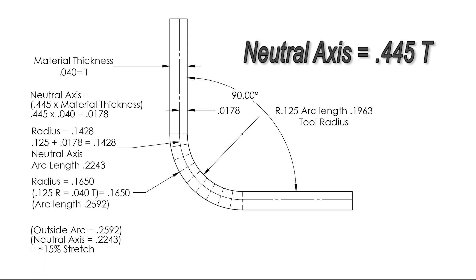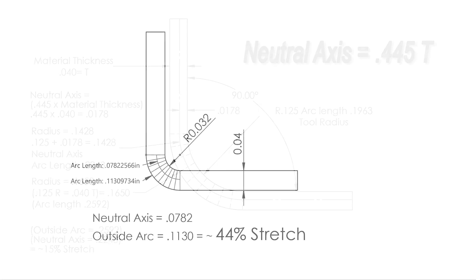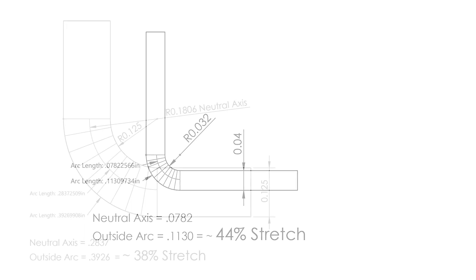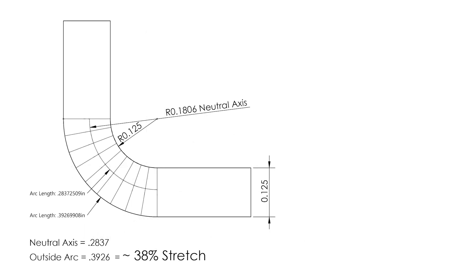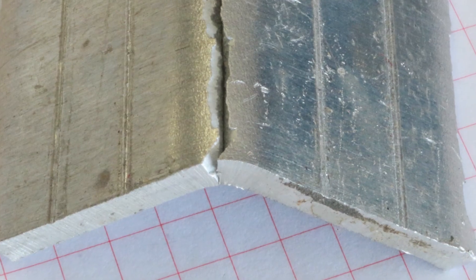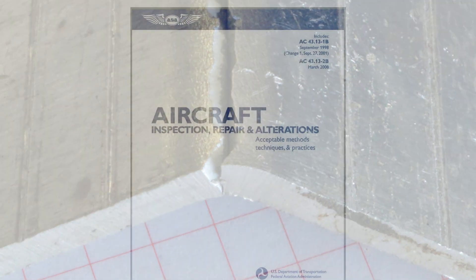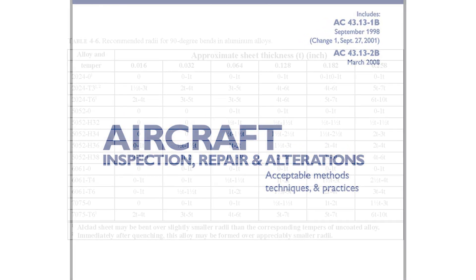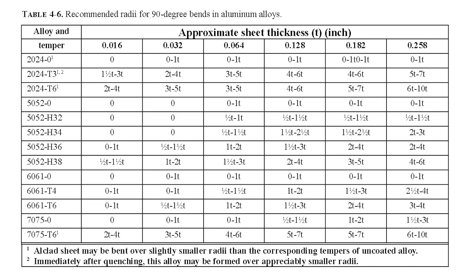Extensive testing has shown that the neutral axis during the bending process is about 0.445 times the thickness of the material. The neutral axis is the section of aluminum that is neither under compression nor under tension during the bending process. The smaller the radius the metal is bent around, and the greater the thickness of material, the greater the differential between the neutral axis and the outside arc of the skin. Stretching the outer skin beyond its limits will normally result in cracking. There isn't a necessity for calculating minimum bend radius because most sheet metal manuals, including FAA Advisory Circular 43.13-1B, have a minimum bend radius chart available for quick reference.